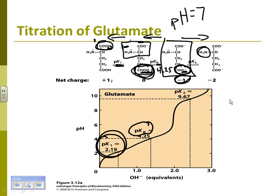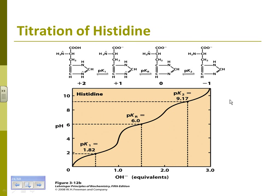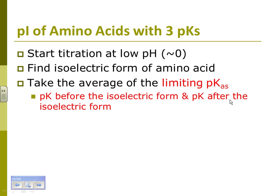Histidine does a very similar thing. Histidine is basic but it's a weird one — even though it's basic, it still has a pKr below 7. The other two basic amino acids are not that way.